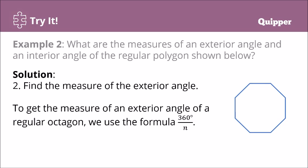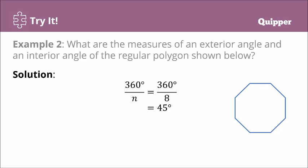Let's find the measure of an exterior angle. Using the formula 360 degrees divided by n, where n equals 8: 360 degrees divided by 8 equals 45 degrees. So if this is an interior angle and we extend this side, the exterior angle measures 45 degrees. Each of the exterior angles measures 45 degrees.